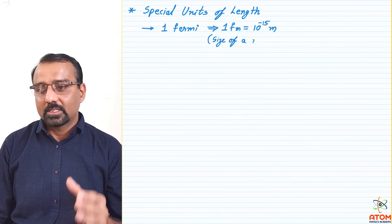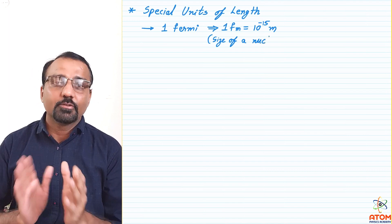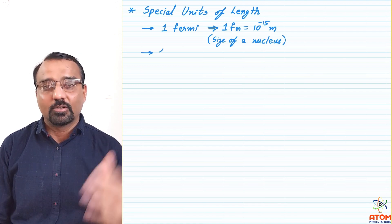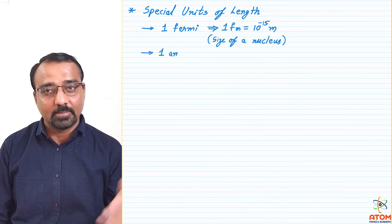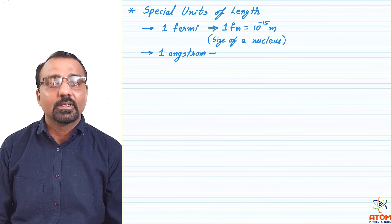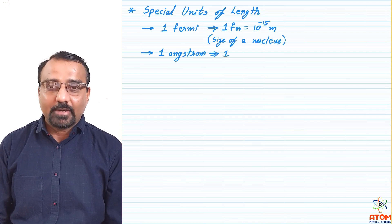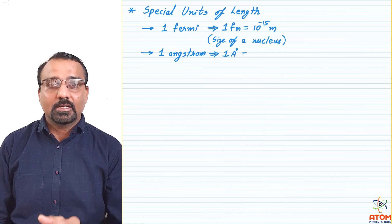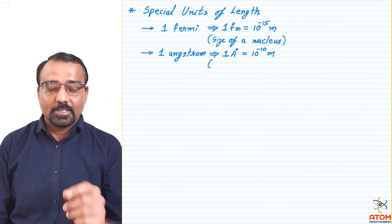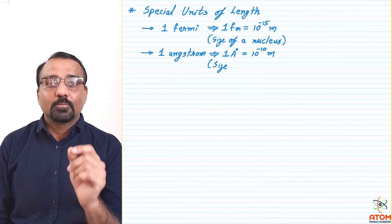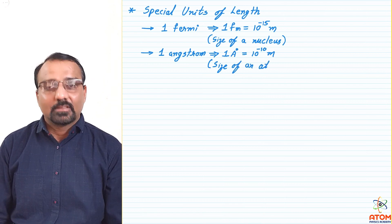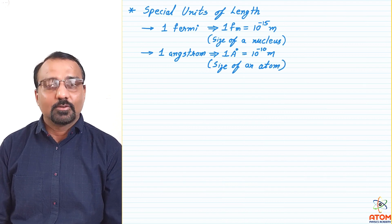The size of a nucleus varies — for hydrogen it is about 10 raise to minus 15 meter, while for uranium it is around 10 raise to minus 14 meter. So we say nearly 10 raise to minus 15 meter is the size of a nucleus. The size of an atom also varies, but generally it is of the range of 10 raise to minus 10 meter. So 1 Angstrom is the unit denoted specially for 10 raise to minus 10 meter, which is the size of 1 atom.